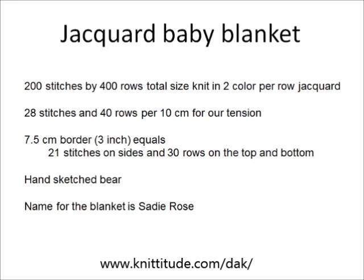I want to knit a rose color blanket 200 stitches wide on a standard bed electronic knitting machine. It's going to be a two color per row jacquard of a baby bear that I sketched by hand and then converted to knit stitches in the design and graphics studio section, then edited to clean it up. Last, we'll insert her name into the design.